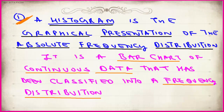What is a histogram or a frequency polygon? It is a graphical presentation of frequency distribution. A histogram is the graphical presentation of absolute frequency distribution — not cumulative, not relative, not cumulative relative — only absolute frequency distribution. It is a bar chart of continuous data, where the intervals are continuous: 0 to 20 marks, 21 to 40, 41 to 60, and so on. It is a bar chart of continuous data that has been classified into a frequency distribution.